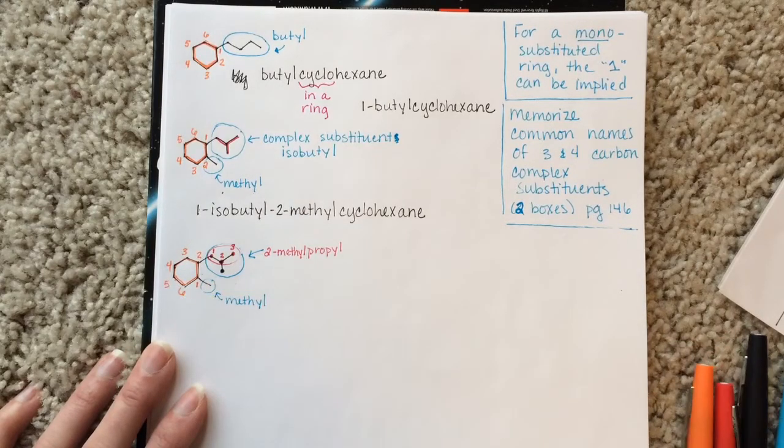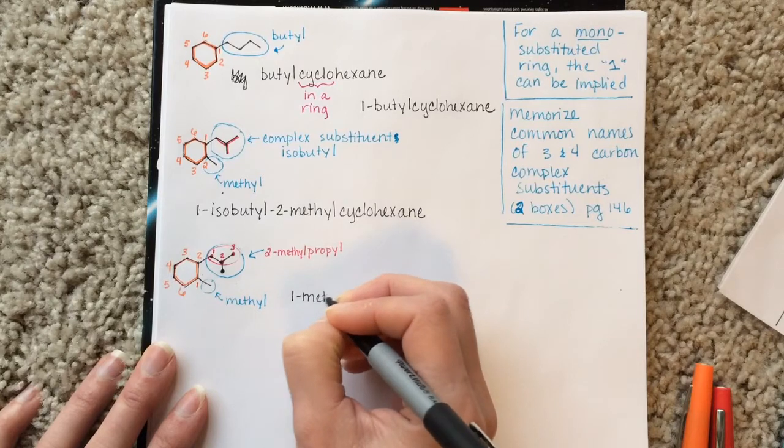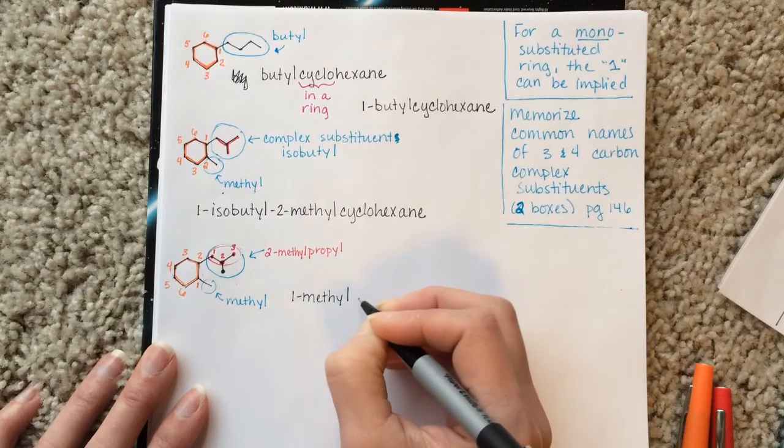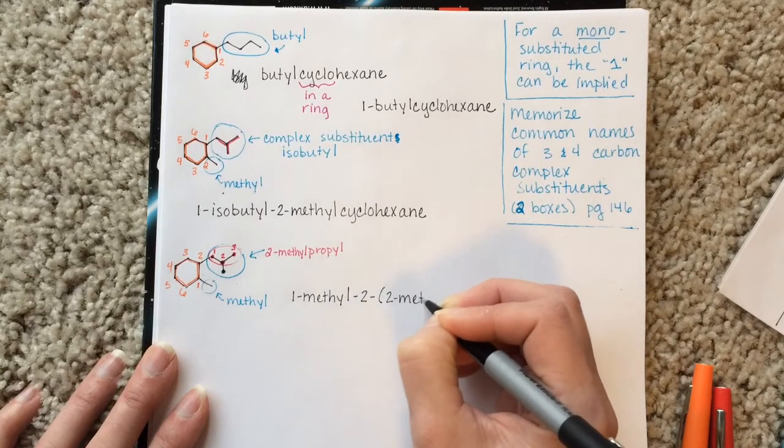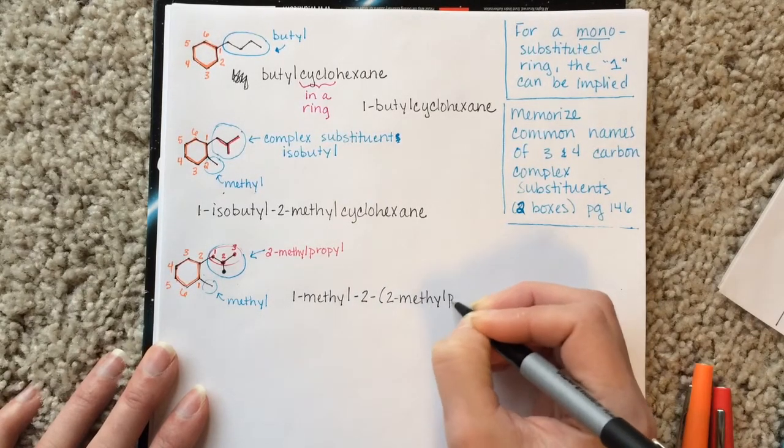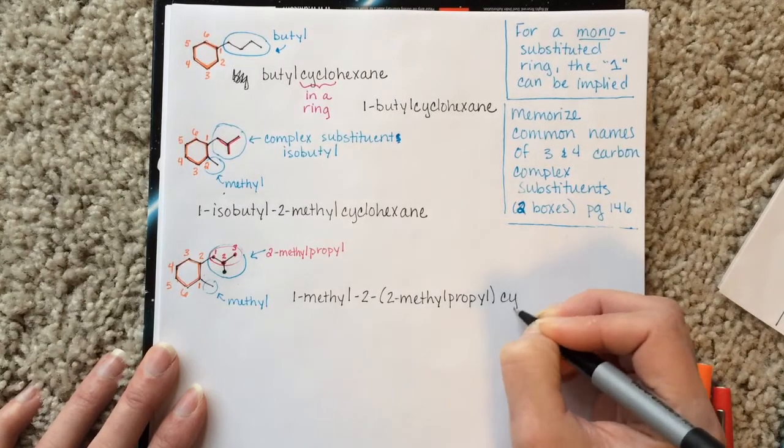So this molecule's name is 1-methyl-2-(2-methylpropyl)cyclohexane.